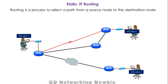Hi everyone, we are going to discuss static IP routing. Static IP routing, or just static routing — routing itself is a process to select a path from a source to a destination node or network.